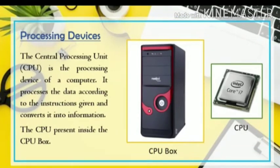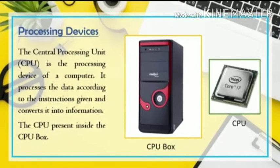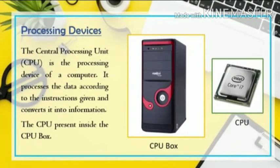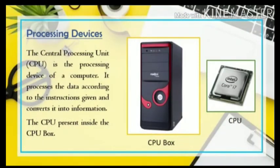Next device is a processing device. Do you know CPU? Yes, CPU is the processing device of a computer. What is the full form of CPU? CPU stands for Central Processing Unit. It processes the data according to the given instructions and converts it into information. CPU is present inside the CPU box. Children, which one is the brain of a computer? Yes, CPU is the brain of a computer. CPU is the main processing device of a computer.